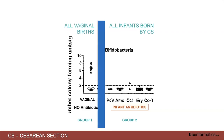But what happens in scenario three? All the infants in group one were delivered vaginally, and in group two they are all delivered by cesarean. You have no infants delivered vaginally in group two, and no infants delivered by cesarean in group one. This is selection bias. You cannot do anything with it — you can never know whether the reduced counts of bifidobacteria are due to the antibiotic or due to the cesarean section delivery. You want to avoid this scenario when planning your subject recruitment and sample collection.